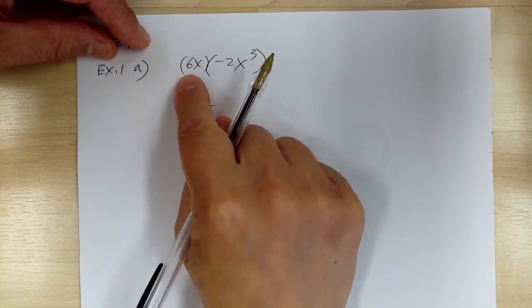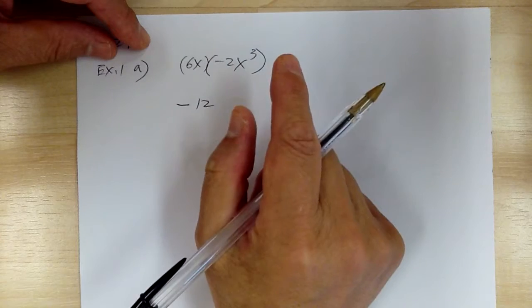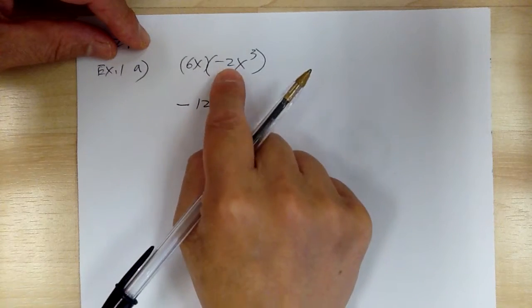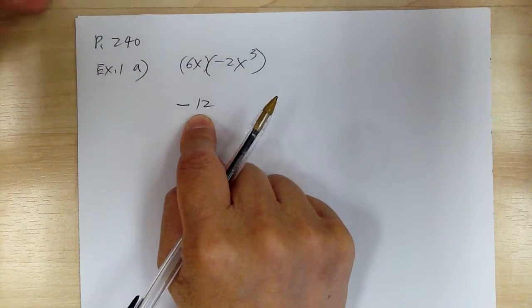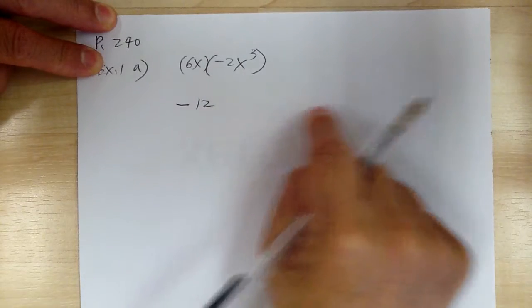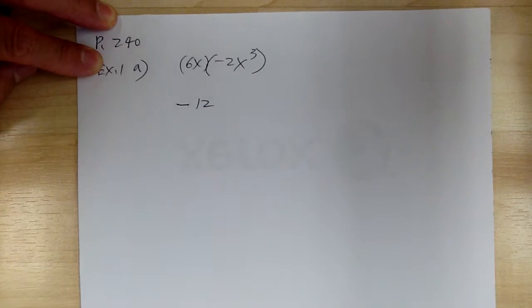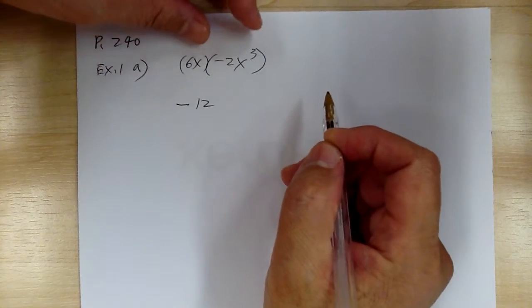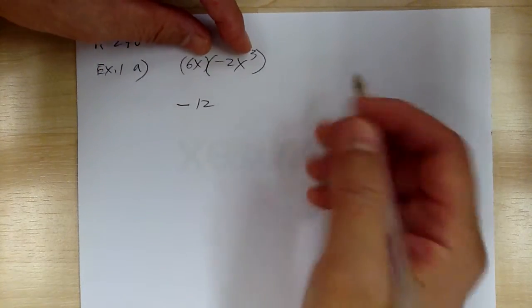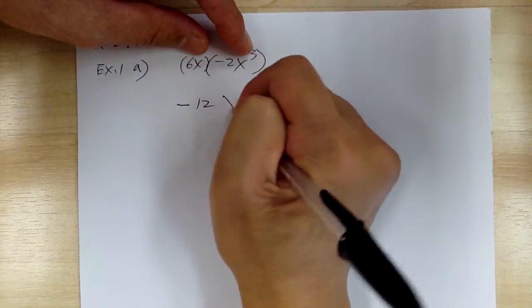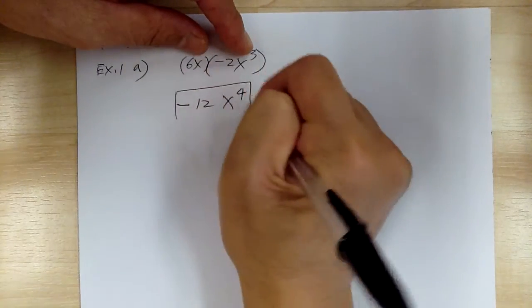Now if the numbers are fairly easy, you can do the sign and the number together. So you can do 6 times negative 2 will give you negative 12. But if you have a lot of stuff, then you might want to do the sign first and then do the number and then do the alphabet after that. The next step, x times x to the 3 will give you x to the 4 and that's it.